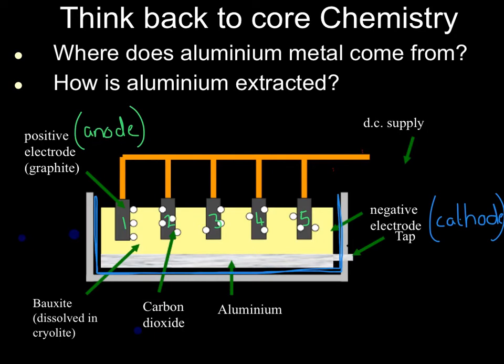Looking at the diagram, we have our alumina dissolved in cryolite — we'll talk about that in a moment — and the anodes are dipped into this electrolyte. The products at each electrode will be considered shortly, but realise from the diagram that it is the same electrolysis you have studied before, just laid out slightly differently.